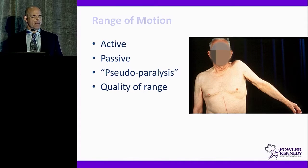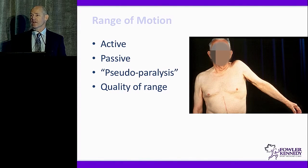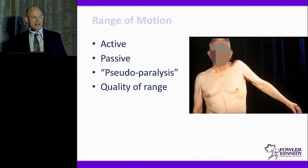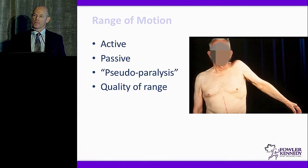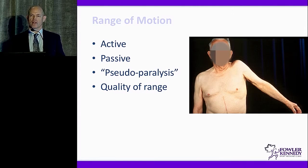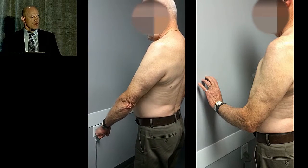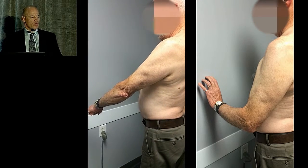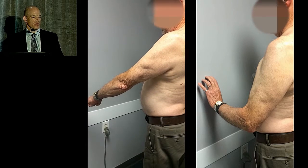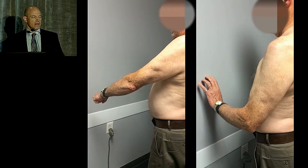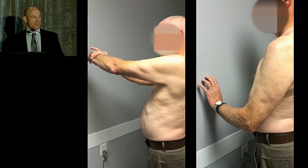For range of motion, we look at active and passive. The concept of pseudo-paralysis is generally defined as inability to lift your arm 90 degrees, but I'm not sure that's a great definition. True pseudo-paralysis is when a patient has to lock the glenohumeral joint, move the scapula, and still can't lift their arm — versus someone who simply has pain inhibition preventing 90 degrees of elevation. The prognosis is completely different, so you want to look at the quality of the range of motion.